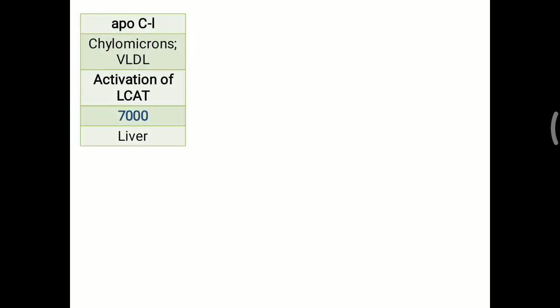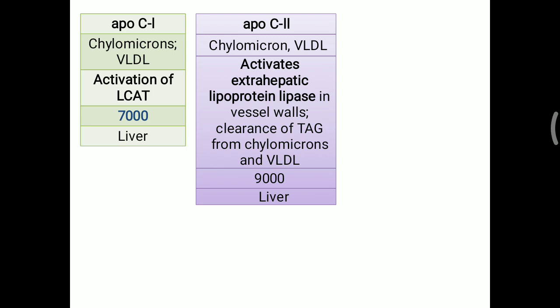Apo C1 is found on chylomicrons and VLDL and is responsible for activation of LCAT. It is produced by the liver. Apo C2 is most important for the metabolism of chylomicrons and VLDL. Chylomicrons contain exogenous triacylglycerol while VLDL contains endogenous triacylglycerol. Apo C2 activates lipoprotein lipase to metabolize the triacylglycerol in chylomicrons and VLDL, making clearance of triacylglycerol exclusively dependent on Apo C2.